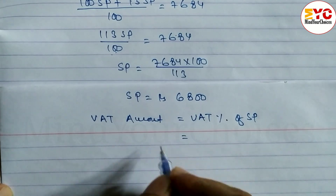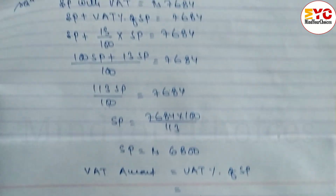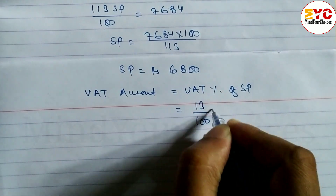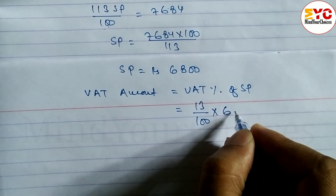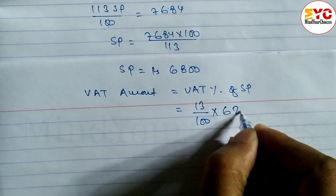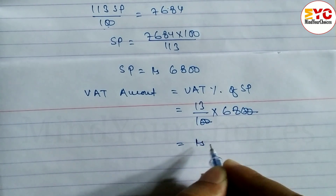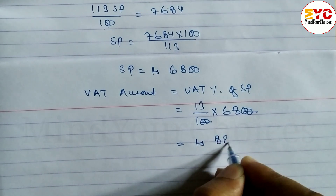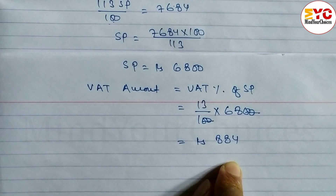If you don't know the formula, please visit the playlist of formulas. VAT percent is 13%, so we write 13 divided by 100 into SP, where SP is 6800. Cancel 100 with 6800 to get 13 into 68, which equals rupees 884. So VAT amount is equal to Rs. 884.